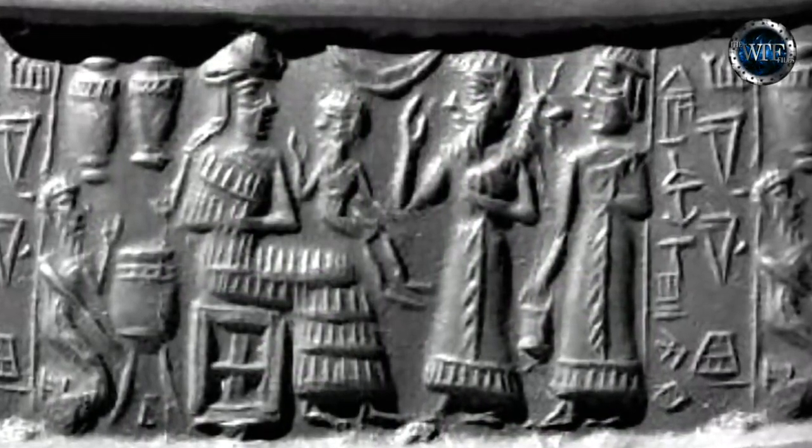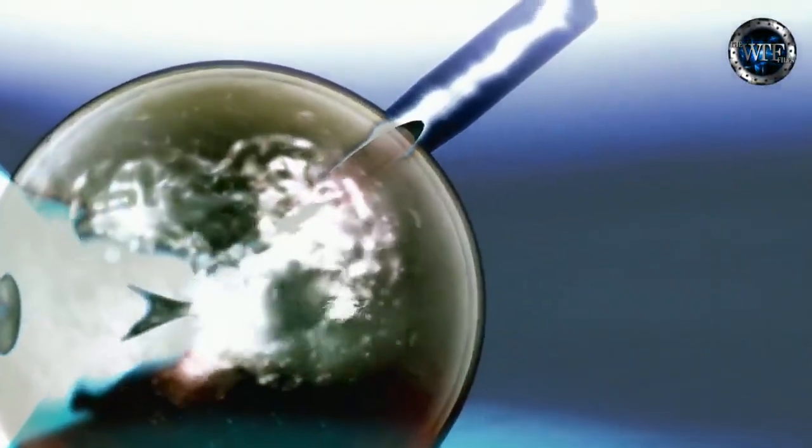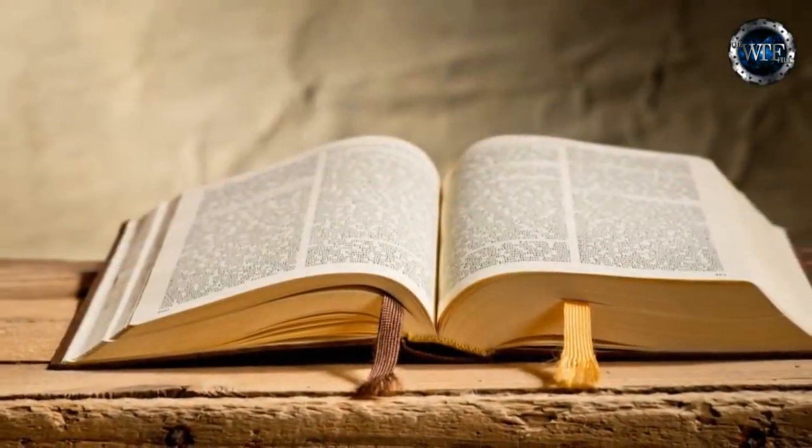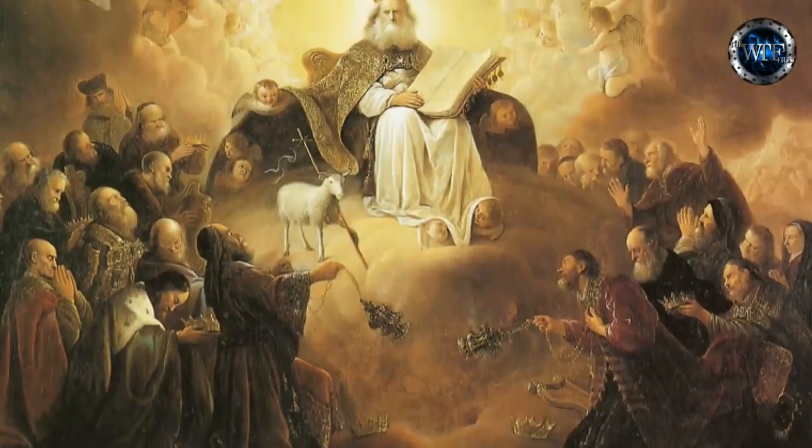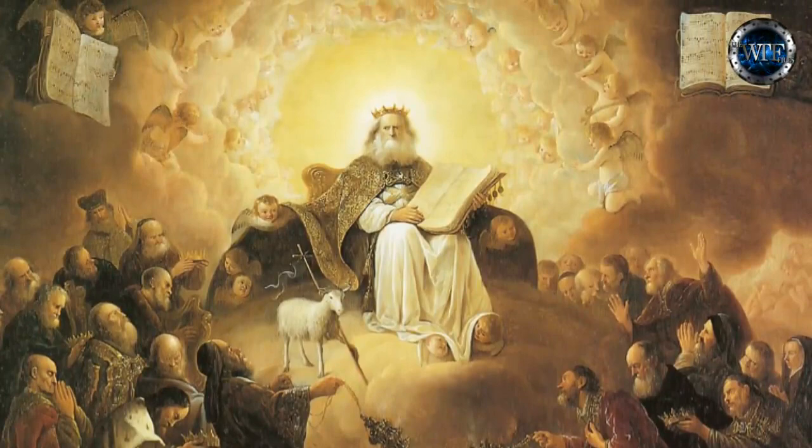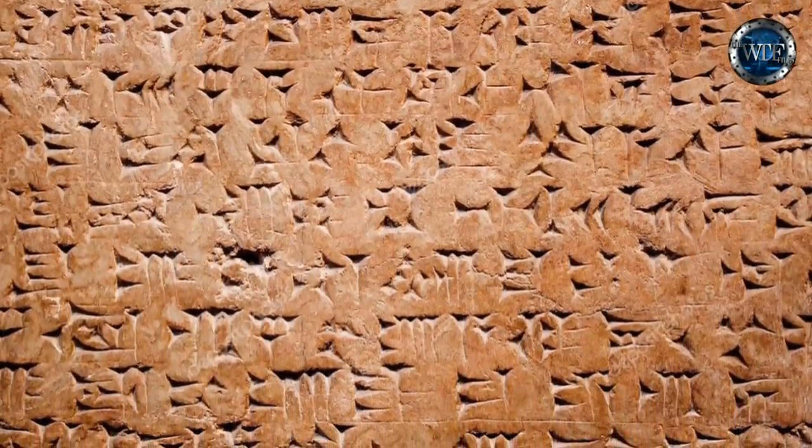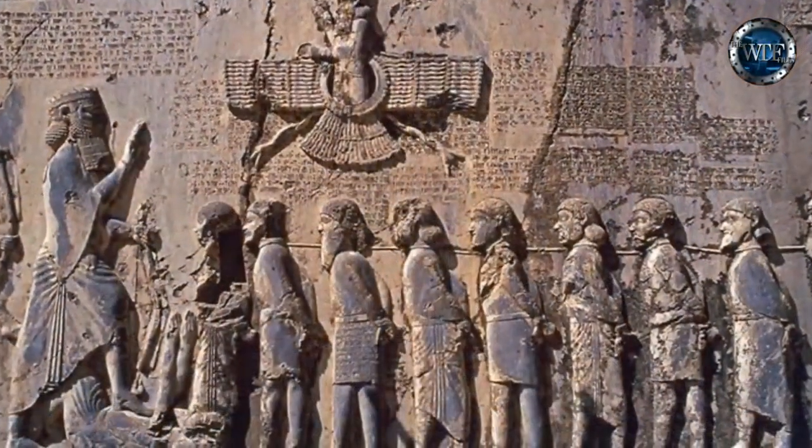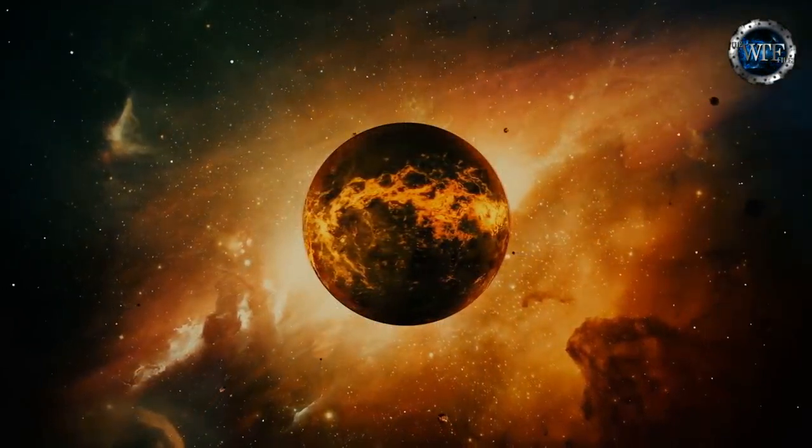The first man was called Adam. Sumerian texts claim Adam was the very first test tube baby. In Genesis chapter 1, verse 26, the Bible reads: Let us make the Adam in our own image and likeness. But why? Sumerian documentation suggests the Anunnaki create humanity as a slave race to assist in mining African gold for the Anunnaki, that they need to save the dwindling atmosphere of their home planet Nibiru.